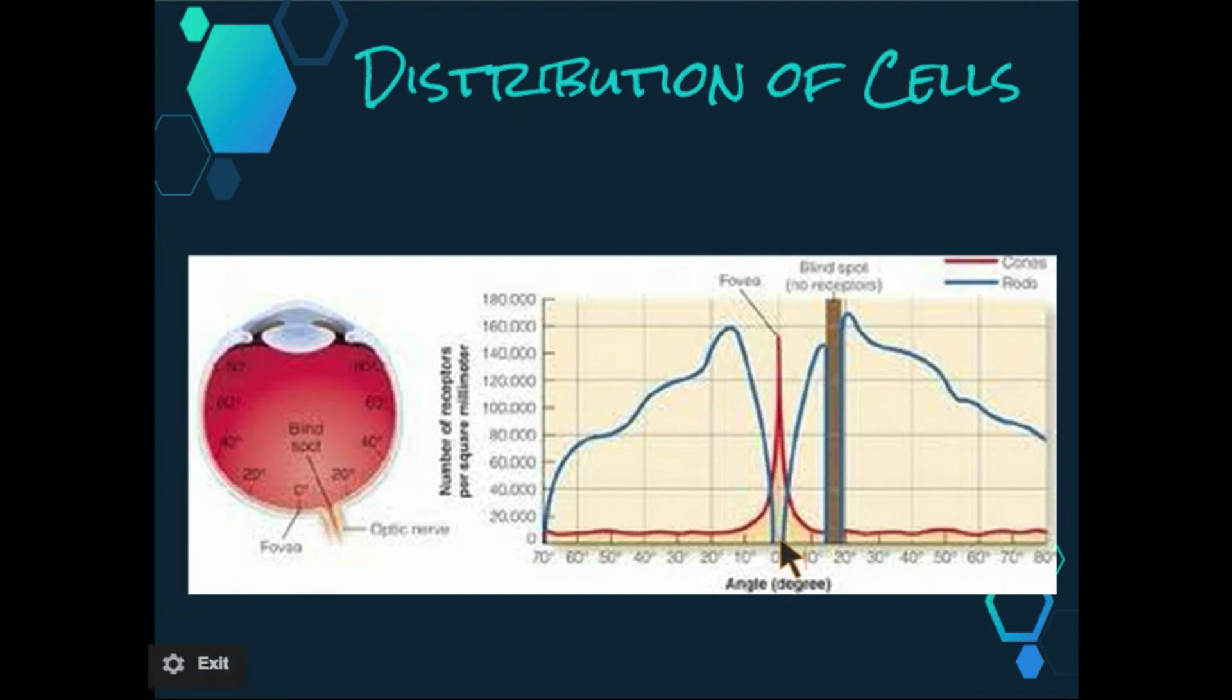As we can see, we have zero rods here. As a result, rods are responsible for most peripheral vision, including the detection of movement.